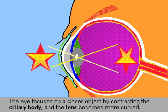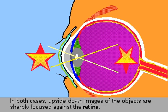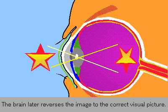In each case, the images are focused against the retina but are upside down. It is the brain that automatically reverses the image so that we perceive the correct visual image.